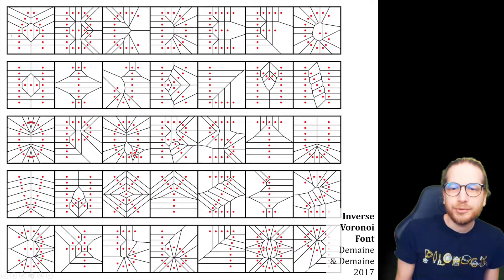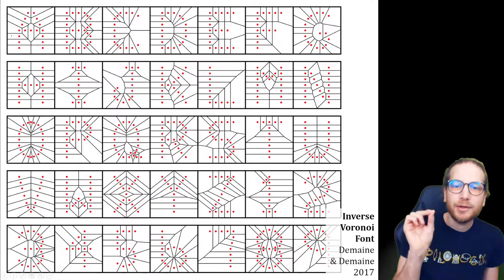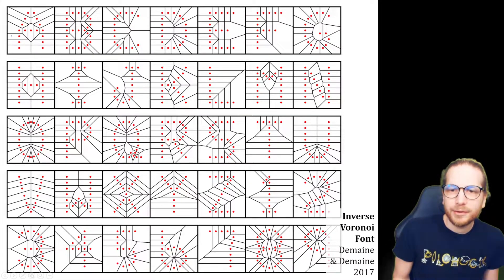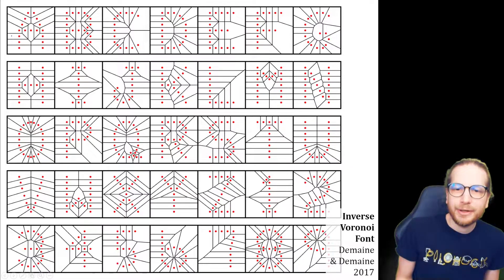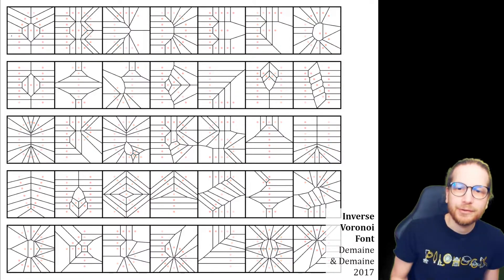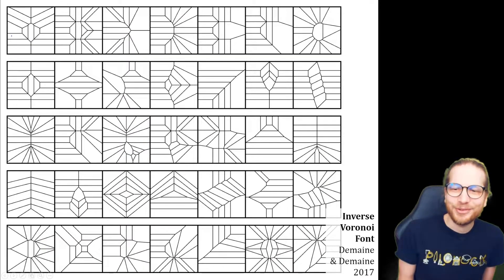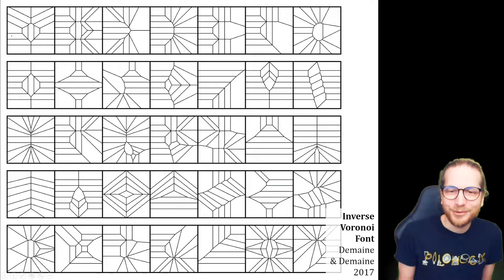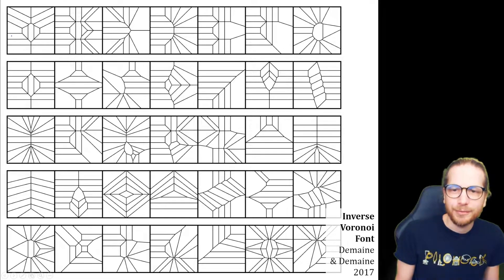A kind of inverse approach is that I put points along the strokes of the letters, and then compute the Voronoi diagram. Now if I erase the points, I get a more abstract representation of the letters. In principle, the letters are still encoded in there, but it's much less obvious to see them. So we call this the inverse Voronoi font.